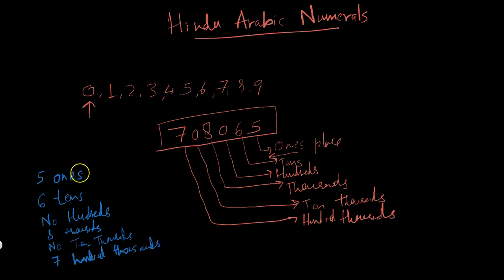As you can see, we have five ones, six tens, no hundreds, eight thousands, no ten thousands because we have a zero there, and then we have the last digit which is seven hundred thousands.